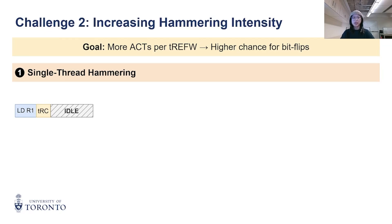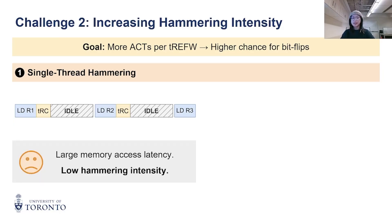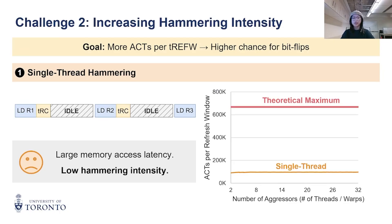During data transfer, DRAM remains idle. After that, the thread can finally send the next load and so on. Since a significant portion of the time is wasted on data transfer, single-thread hammering achieves only 15% of the theoretical maximum intensity. This is clearly suboptimal.